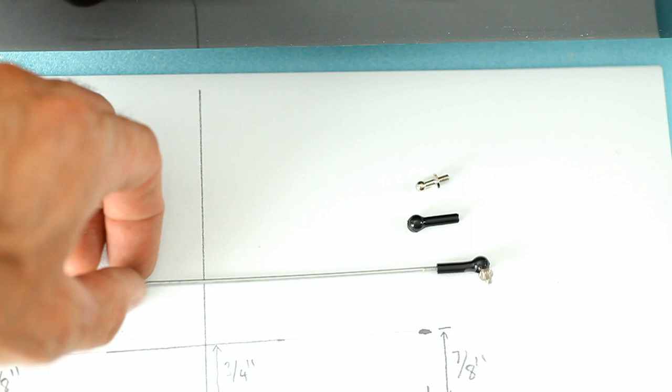You just will slide this into your throttle arm and lock it in with the nut on the opposite side using some Loctite, and then this will just pop onto the ball as so.